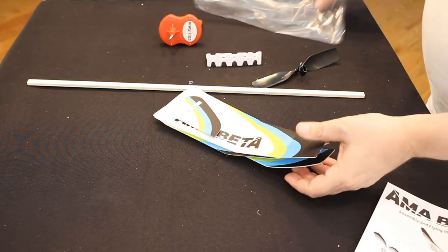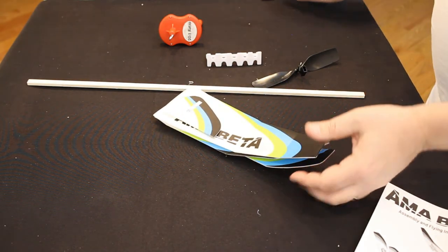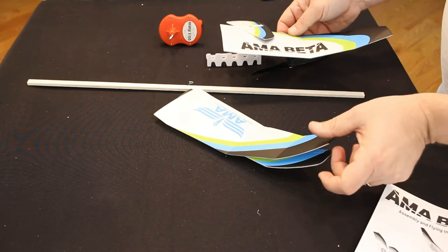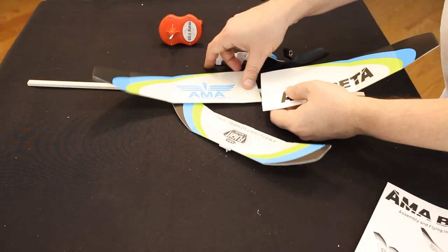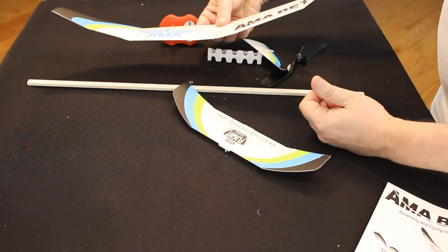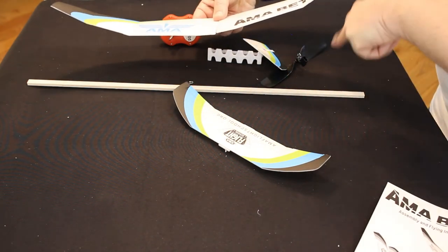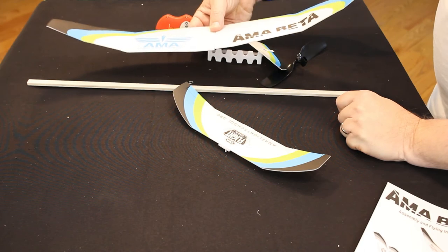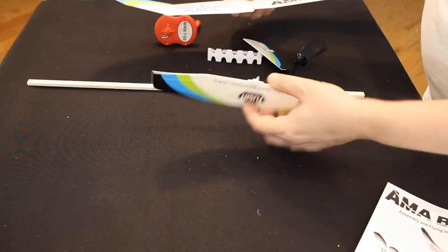What's interesting about this particular one is that it definitely has a lot more dihedral, so the two wingtips stick up a whole heck of a lot more than they did on the Alpha.